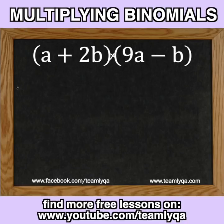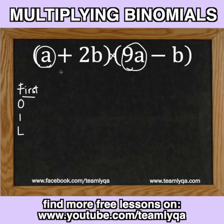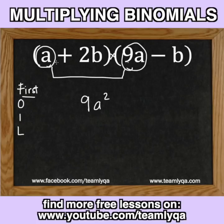Ang rules dito is FOIL. Ang ibig sabihin ng FOIL is yung sequence ng kung ano yung isosolve mo dito. Basically, what you have to do is to multiply everything by everything. Yung F stands for First — you will look at kung ano yung first dito at first din dito. So, yung A at saka 9A, imumultiply mo siya. The answer to that would be 9A squared, kasi you have 9 there, and then 2A — kung ilan yung letters na nauulit, yun yung number sa exponent. So, yung first natin apart is 9A squared.